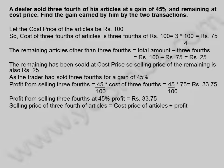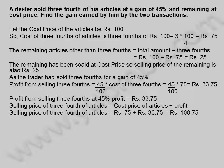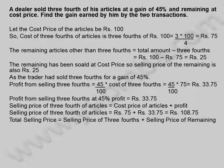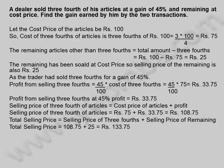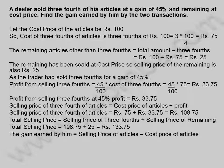Profit from selling 3/4 at 45% profit is equal to 33.75 rupees. Selling price of 3/4 of articles is equal to cost price plus profit, equal to 75 rupees plus 33.75 rupees, equal to 108.75 rupees. Total selling price is equal to selling price of 3/4 plus selling price of remaining, equal to 108.75 plus 25, equal to 133.75 rupees.